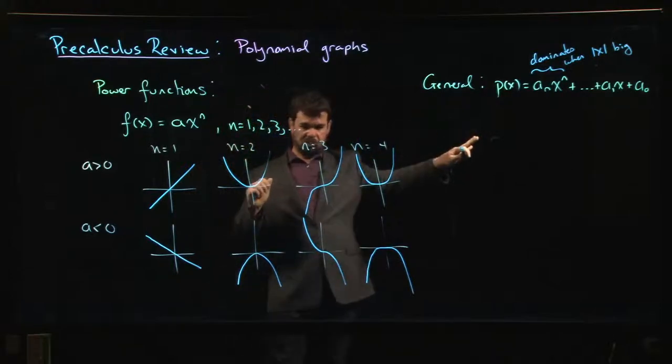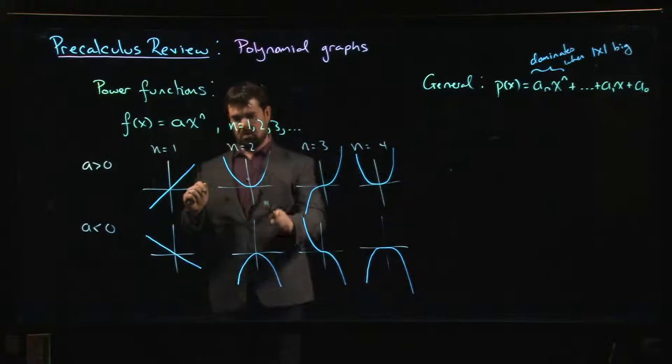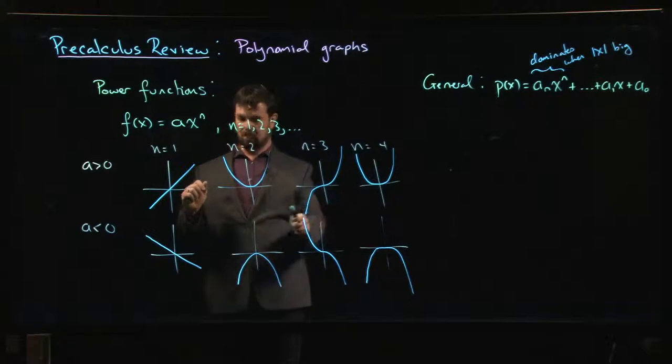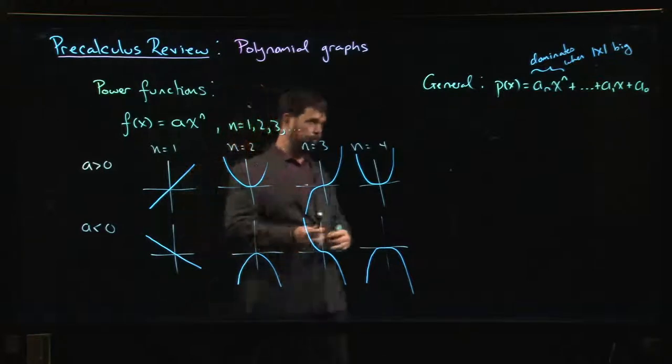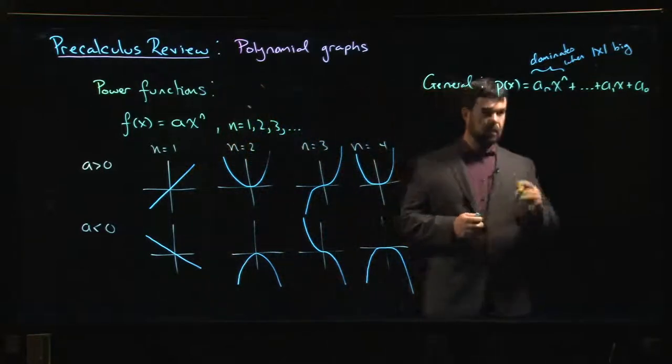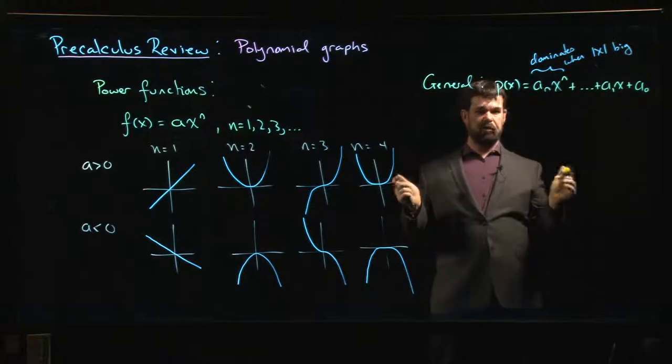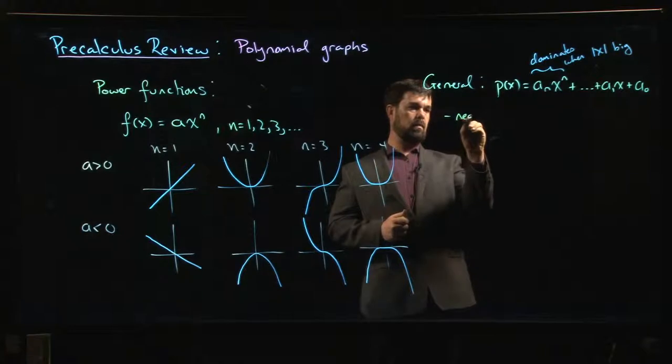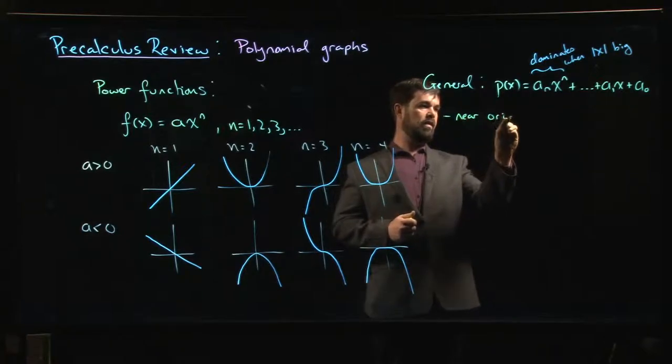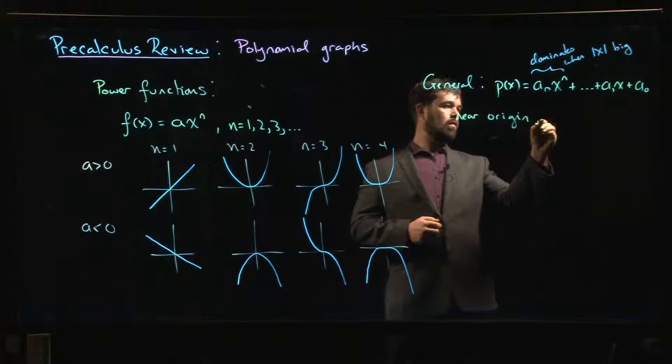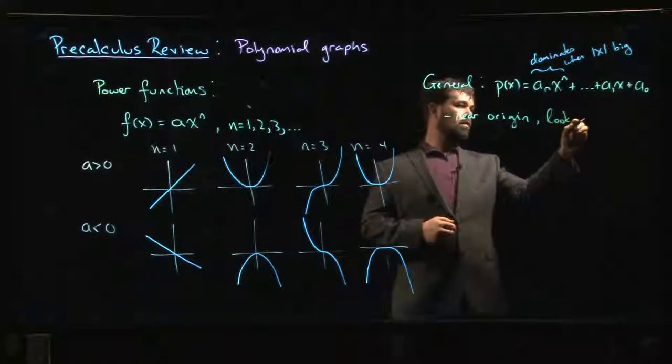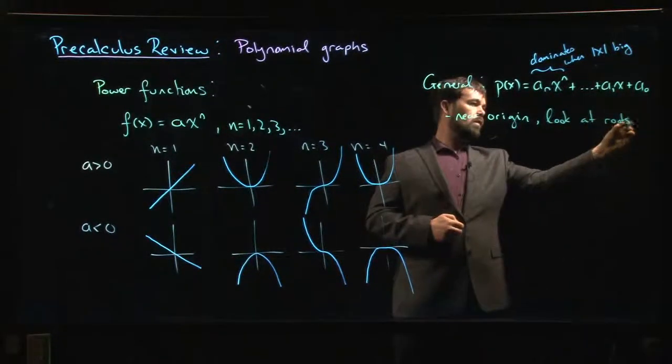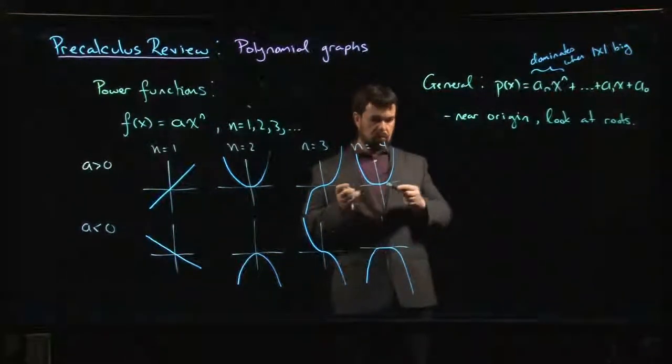Everything else controls what's going on in the middle. So if you've got additional terms other than that leading term, that's going to sort of spice up things here in the middle. You might have some roots. So we know what it kind of looks like when x is big and when x is small. So if we're kind of near to the origin, that's where we want to look at the roots.